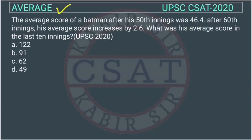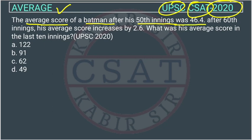This is a question on averages asked in the UPSC CSET exam 2020. The average score of a batsman after his 50th inning was 46.4.